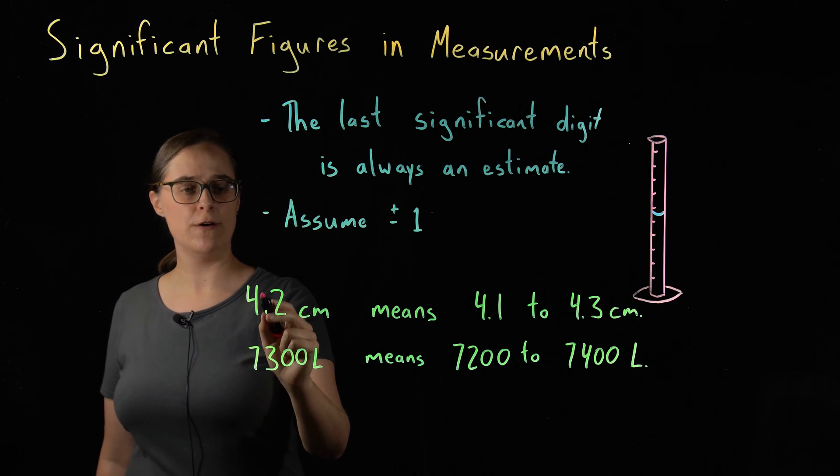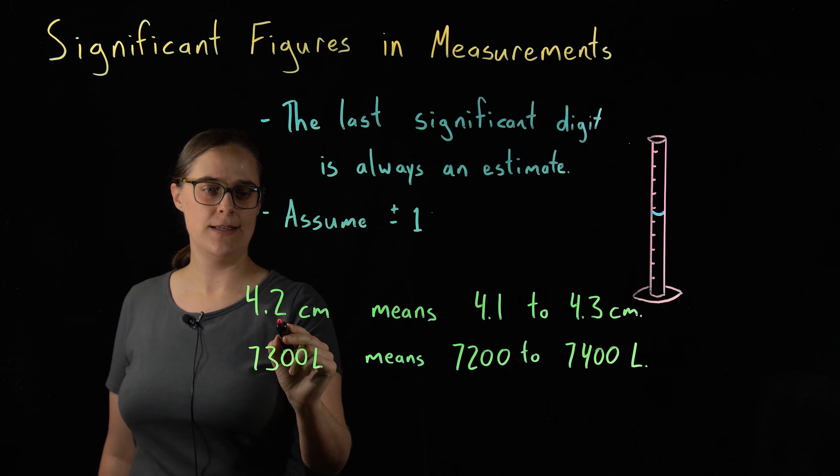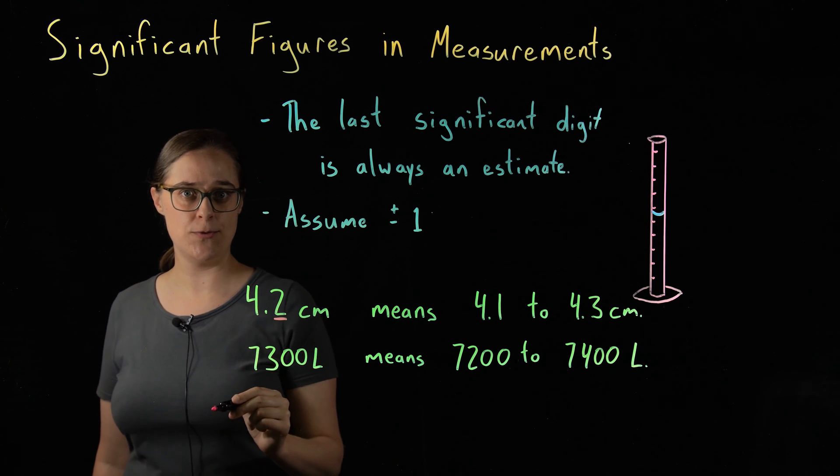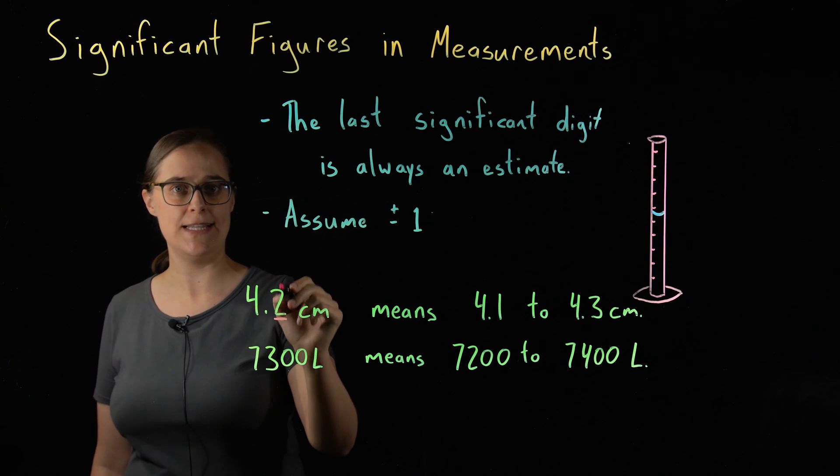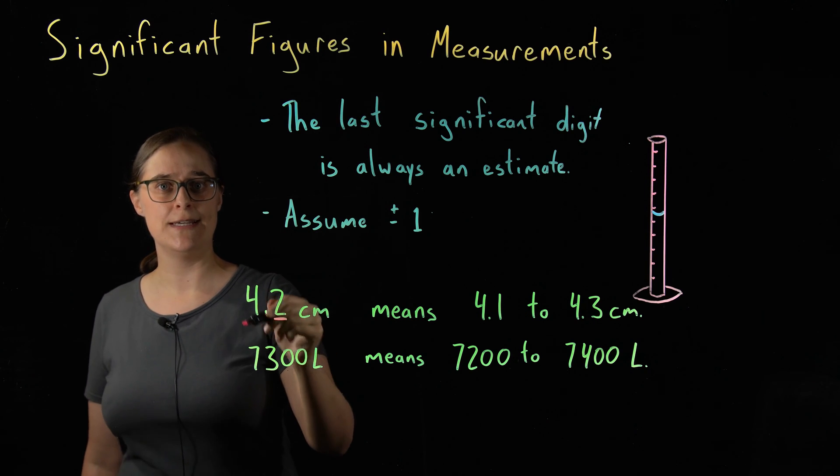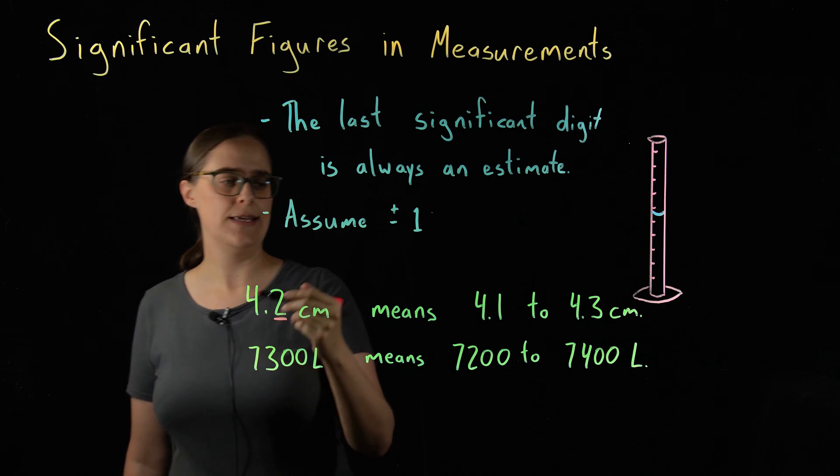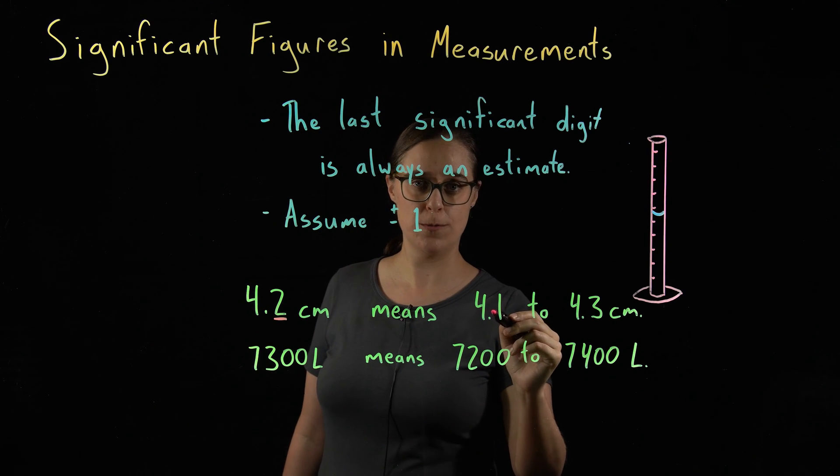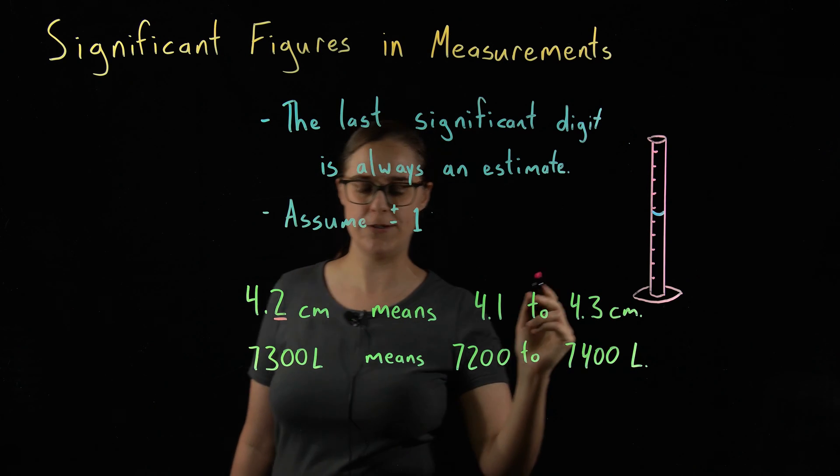If I record a value of 4.2 centimeters, the last significant digit is this 2 in the tenths place, and it is plus or minus 1. That means 4.2 centimeters, the actual quantity, is anywhere in the range of 4.1 to 4.3 centimeters.